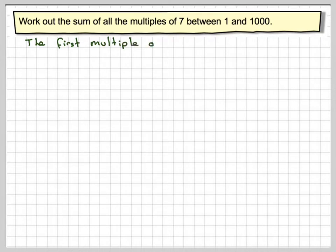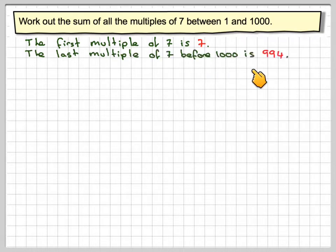So the first multiple of 7 will obviously be 7 itself, and the last multiple of 7 in this range, so the last multiple of 7 before 1,000 will be 994. You can find that with your calculator.